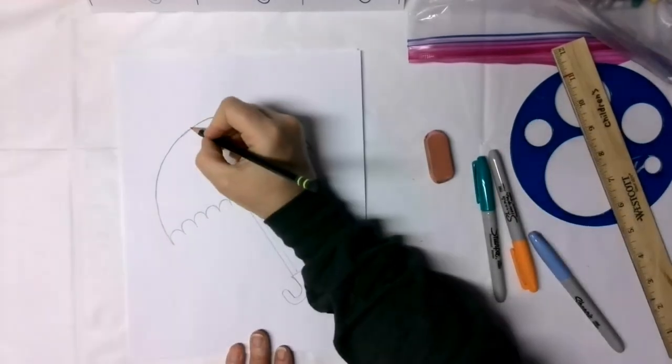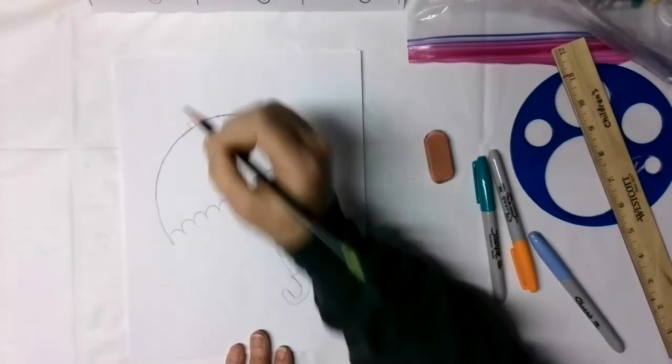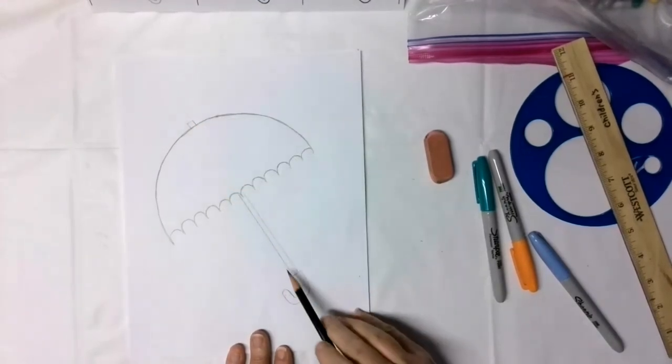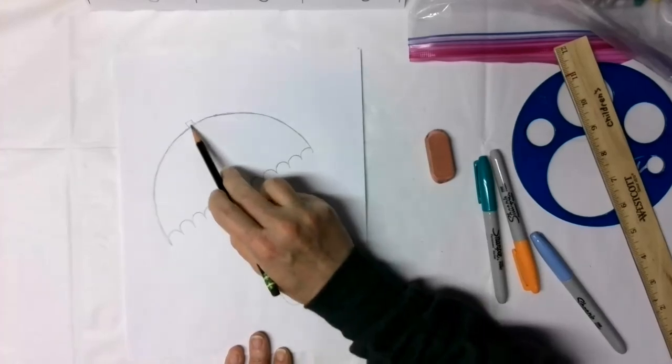And your last step, well second to last actually, is to go over there and put your little top. So where your handle and stem goes all the way through.